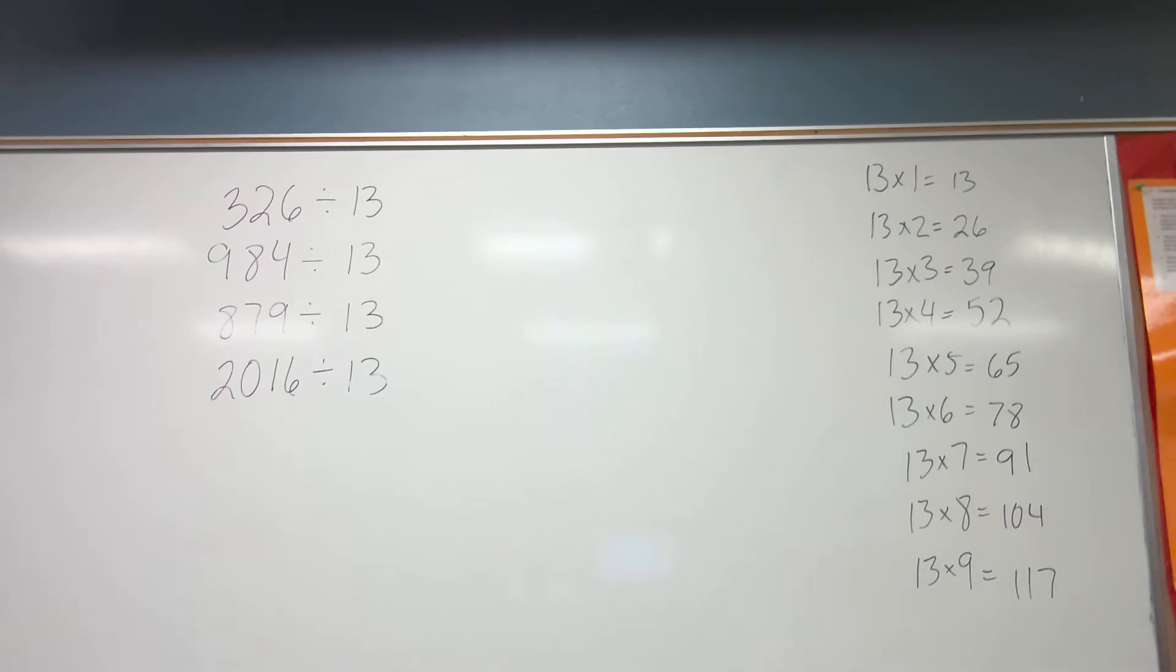Why do you stop at 9, Mr. McMurdo? Because I'm only putting one number at a time at the top in my quotients. Only one number at a time in my quotients.